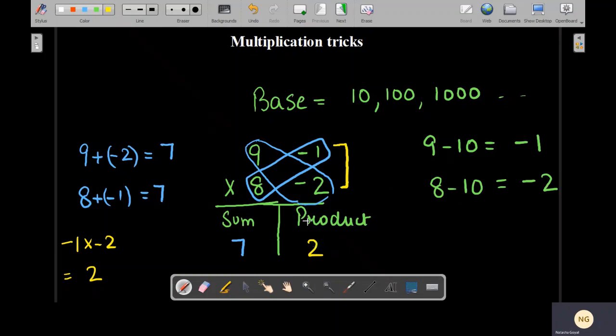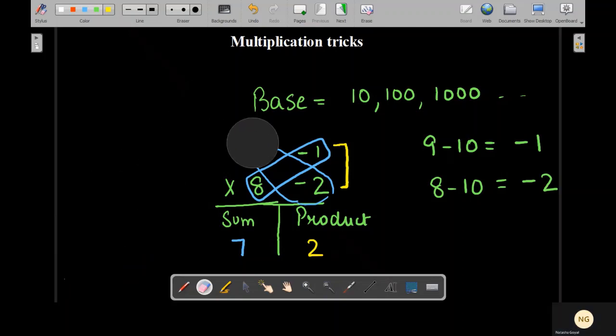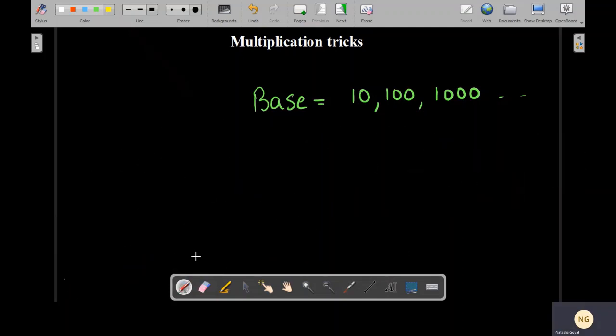Now let's try this trick with some big numbers. Let's try to take a two-digit number. So I'm taking 98 times 97. Now as it is a two-digit number, we have to check the base first. So the base is 100 because these two numbers are closer to 100.